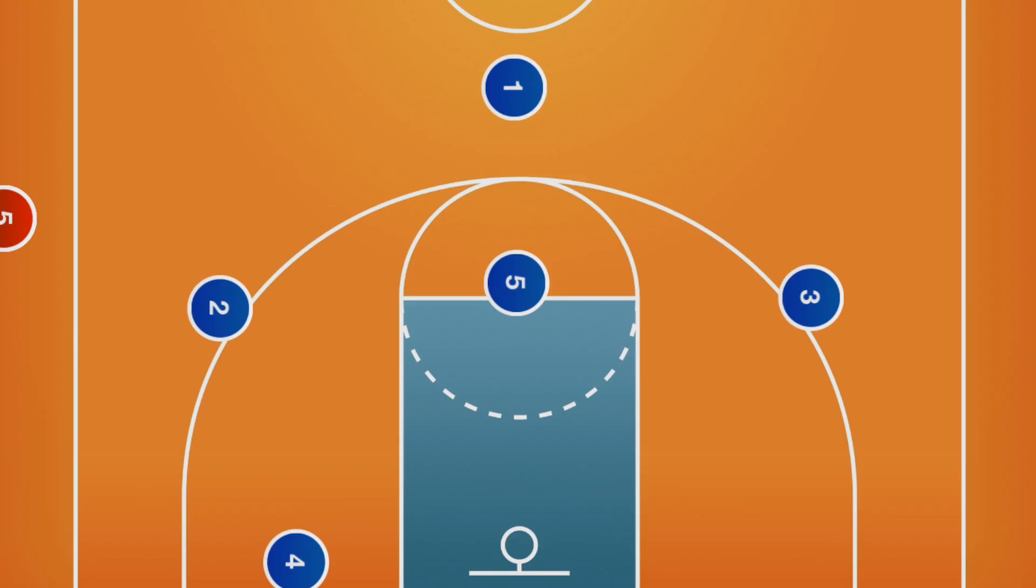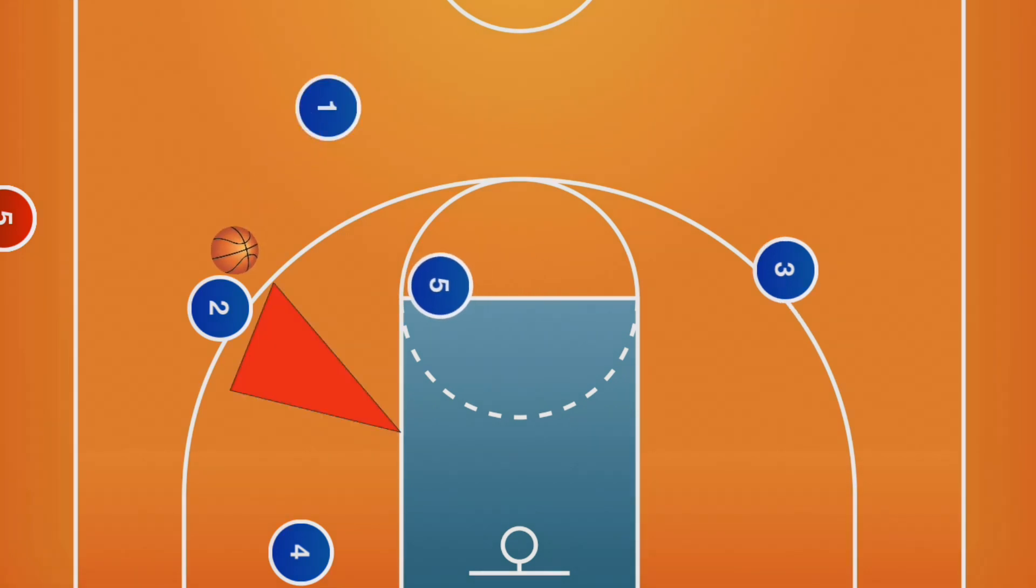Alright, let's recap. These are the default positions of the high-low action. Target the high post and short corner. Penetrate. Use dribbles to attack the paint. And swing the ball fast.